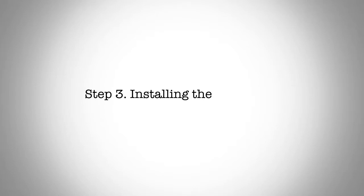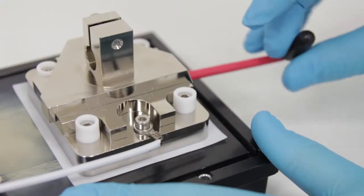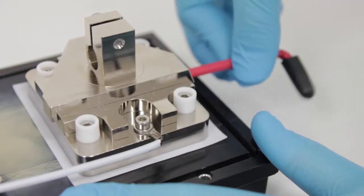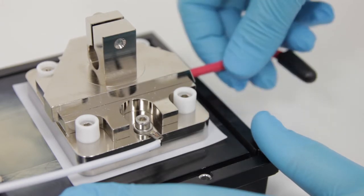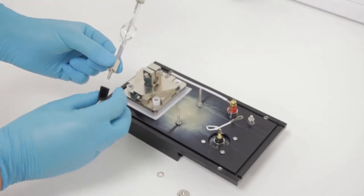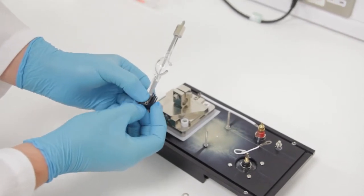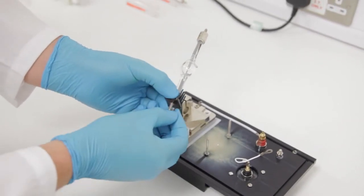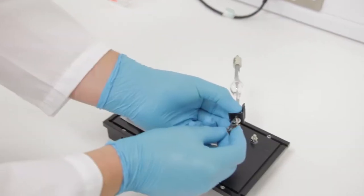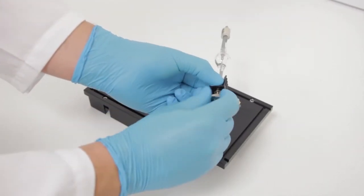Step three, installing the lamp. Center the vertical position of the anode mounting block by adjusting the vertical alignment screw. Being careful not to touch the glass envelope, grip the new lamp by the cathode and fit the cathode heatsink, washer, and cable into place using the finger tight nut.